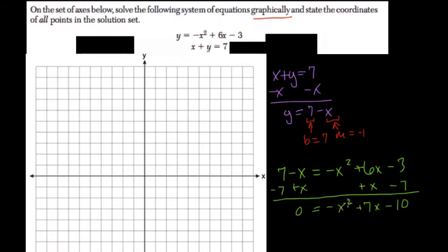So multiply everything by negative 1. We get 0 equals x squared minus 7x plus 10. So now the task is a little bit different. We're trying to find factors of positive 10 that add to negative 7. And that we can do.